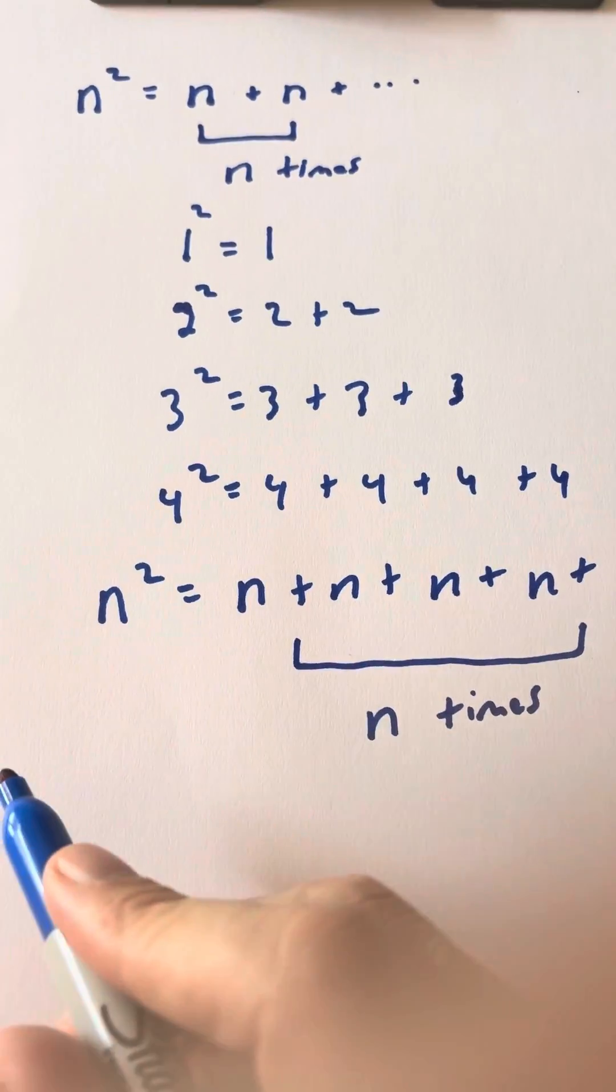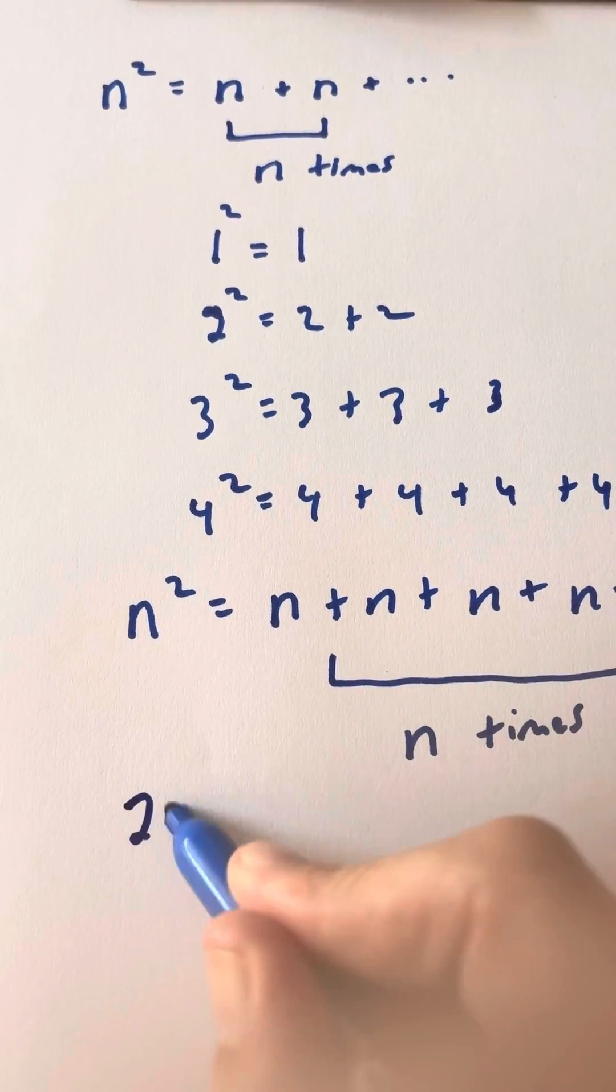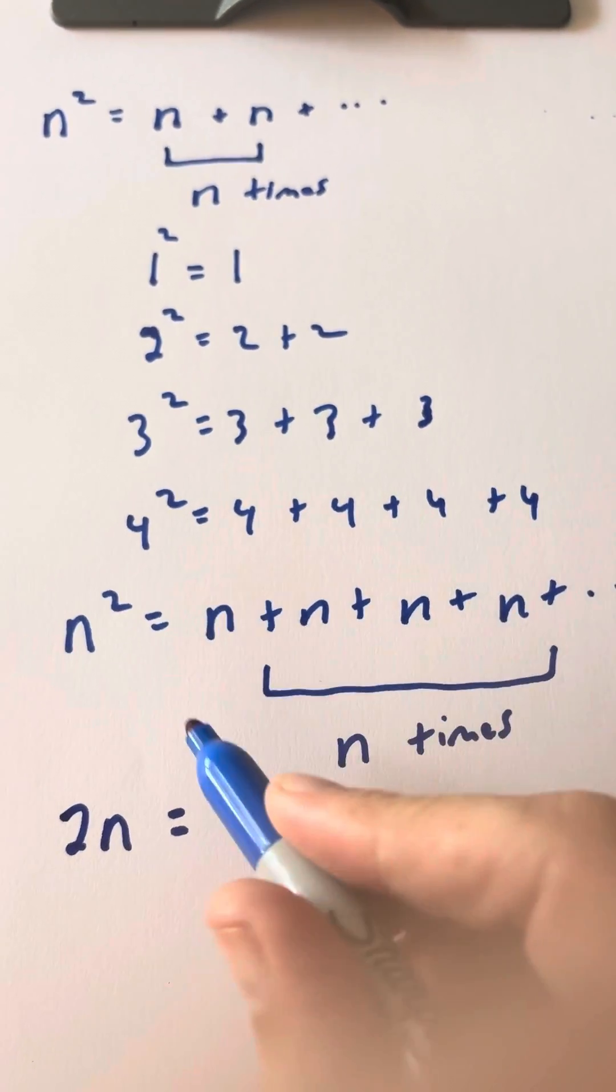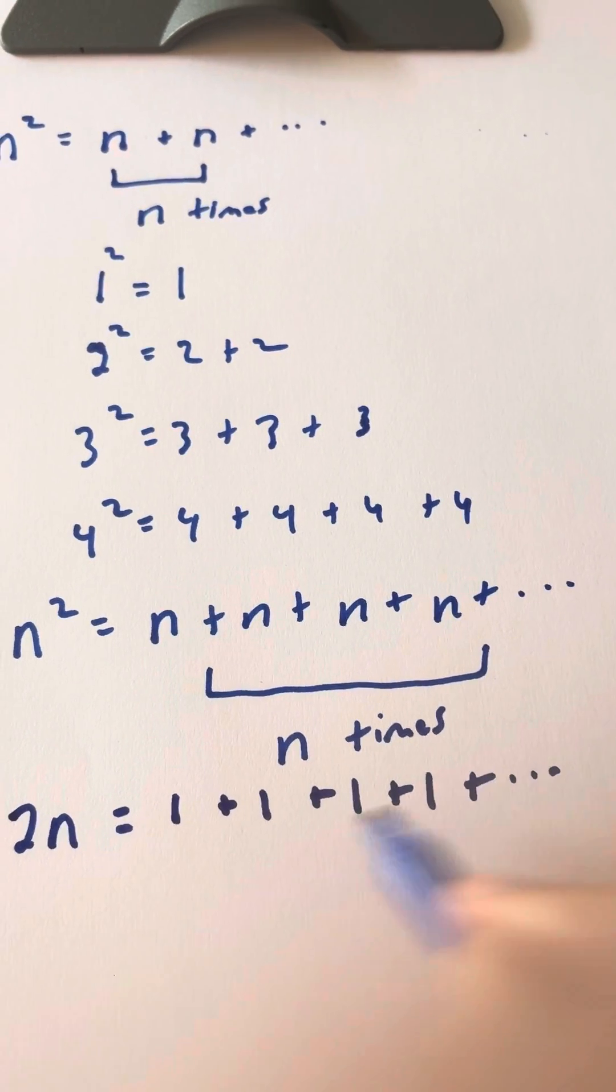What we're going to do here is we're going to actually take the derivative of both sides using calculus. So the derivative of n squared is just 2n. Now, the derivative of n is just 1. So we have 1 plus 1 plus 1 plus 1 and so forth.